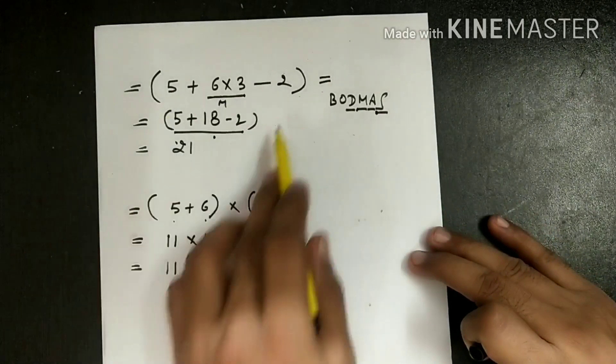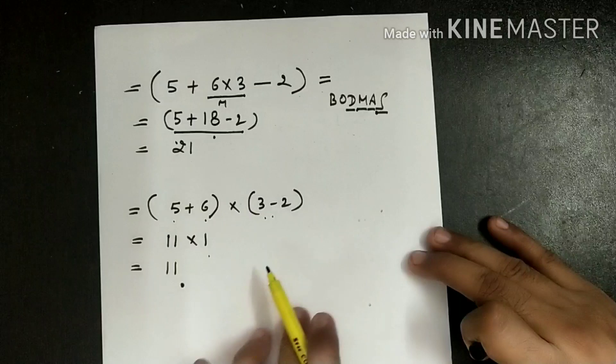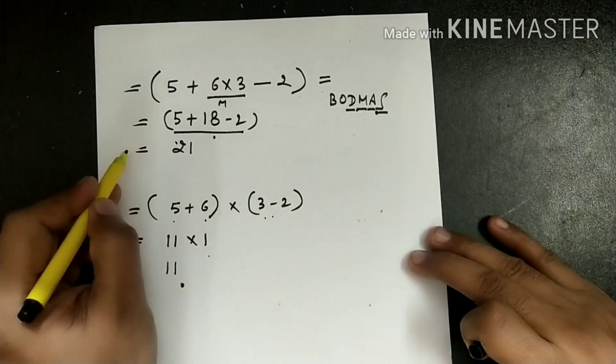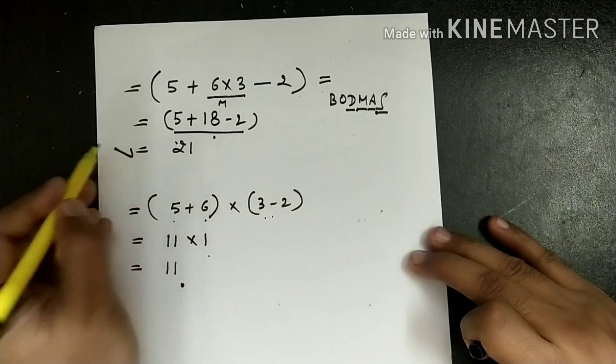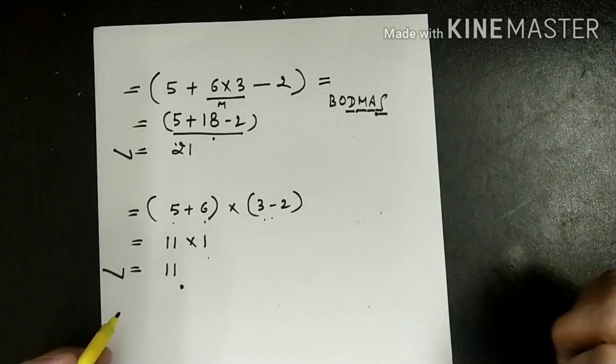So you can see here we have used same numbers, but bracket has changed the whole scenario. In this question we are getting answer 21, and in this question we are getting answer 11.